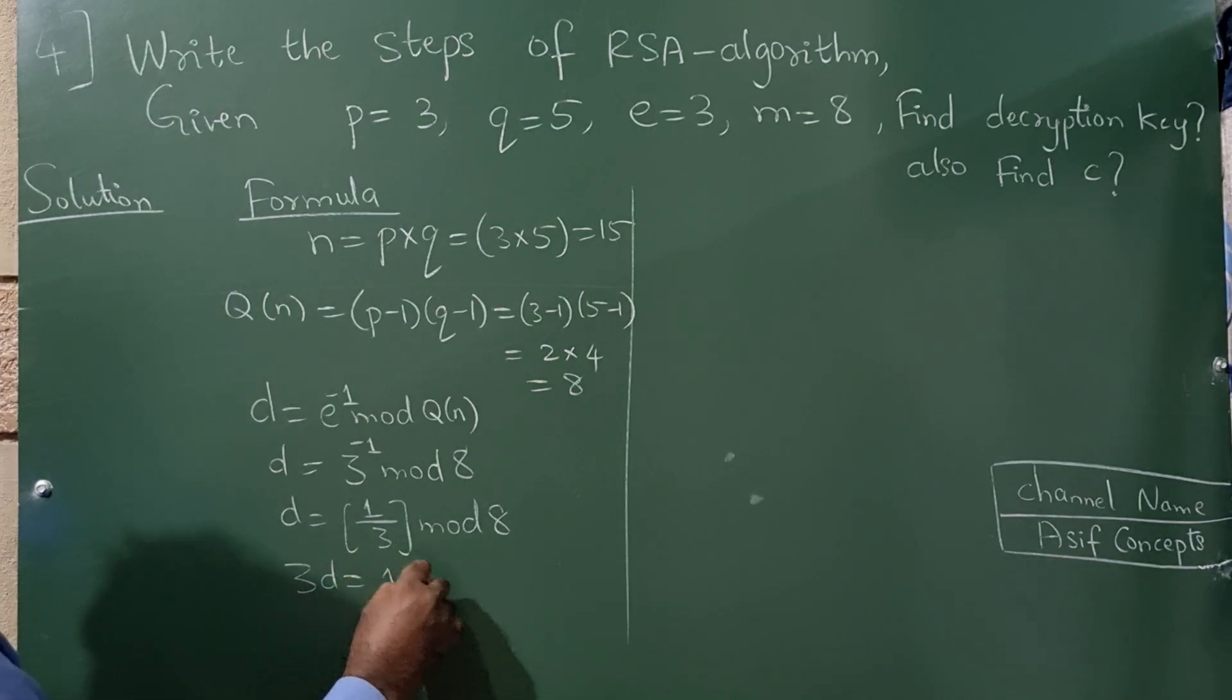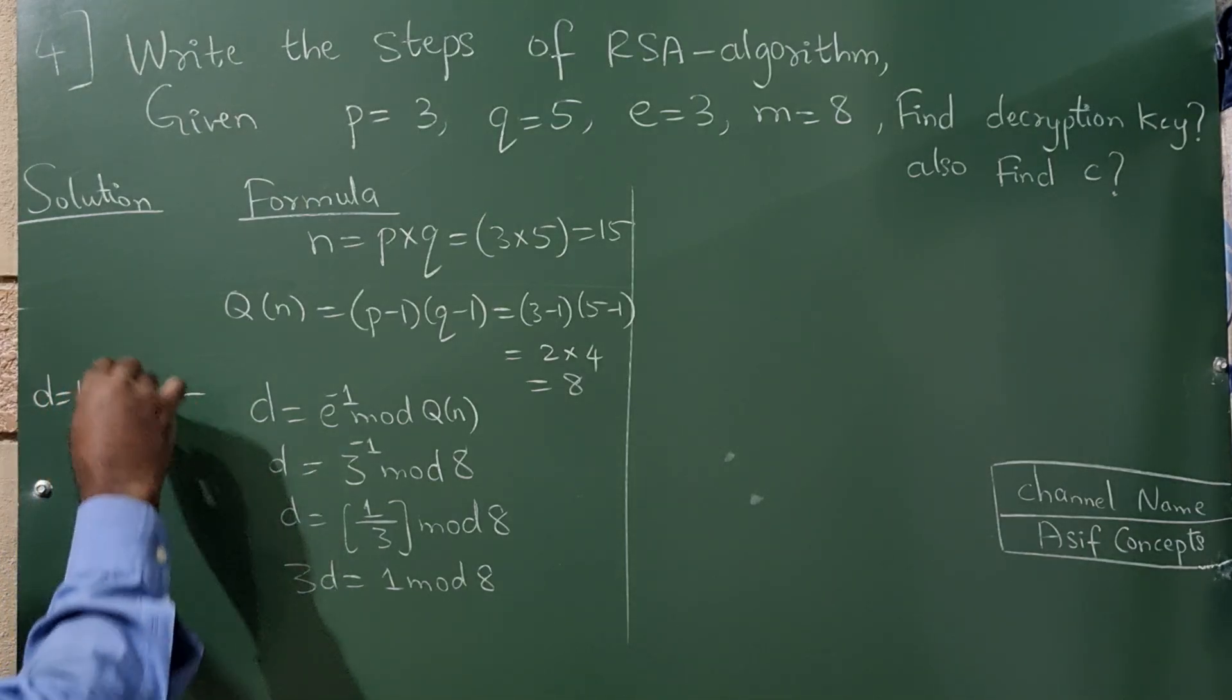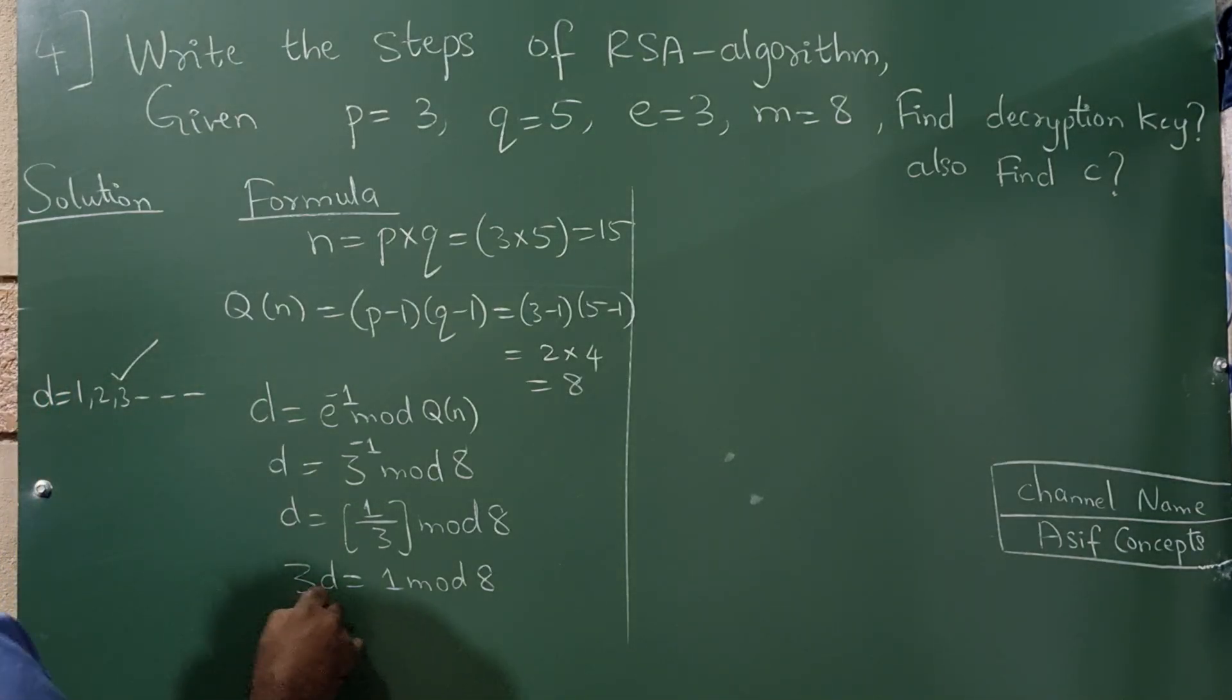Cross multiply, it will become 3D is equal to 1 mod 8. Now take the D value as 1, 2, 3 and so on. So let me take D value as 3.